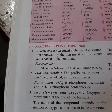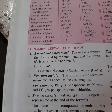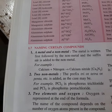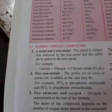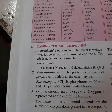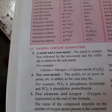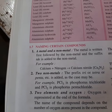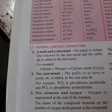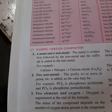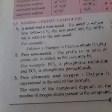The non-metal's name is added with the suffix -IDE. If oxygen is there, it becomes oxide. If nitrogen is there, it becomes nitride. Sulfur becomes sulfide — IDE is added. For example, chlorine, when it combines with some metal, we call it chloride. Iodine when combined changes to iodide, and so on.